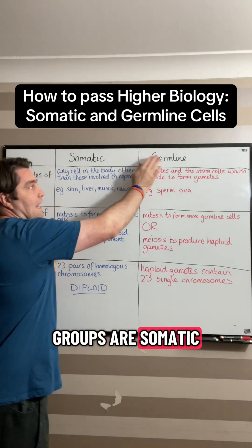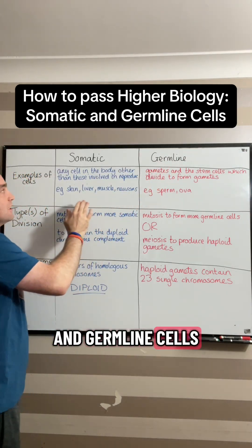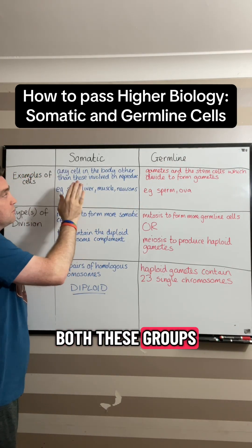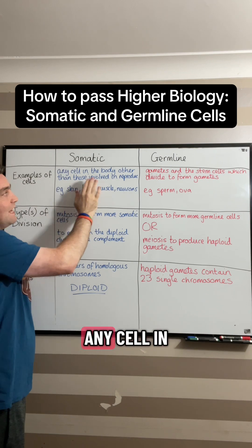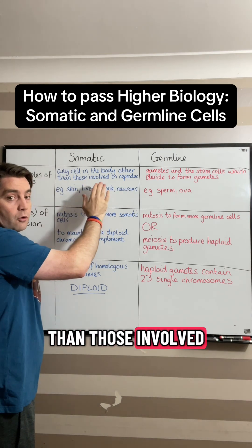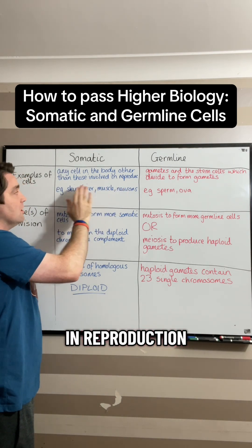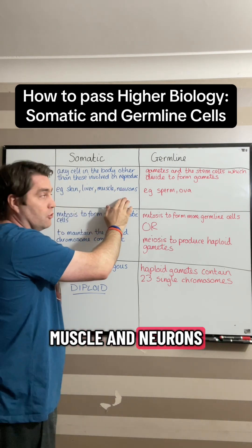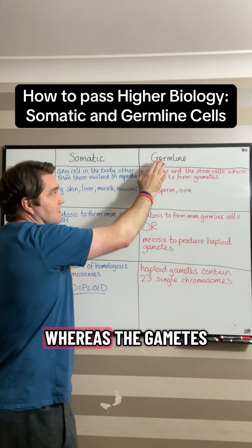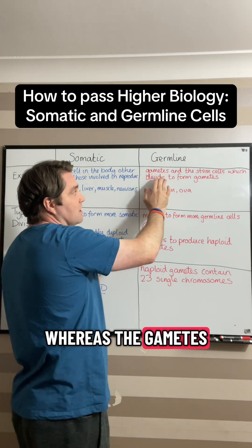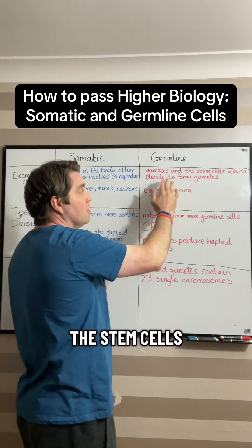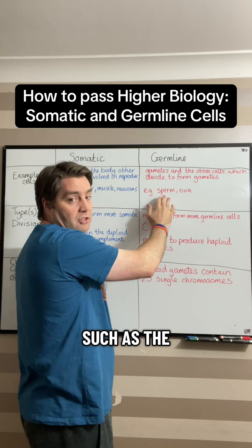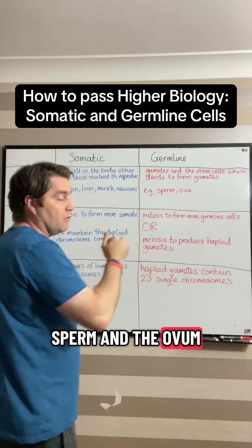The two groups are somatic and germline cells. Somatic cells are any cell in the body other than those involved in reproduction, so things like skin, liver, muscle and neurons, whereas the germline involves gametes and the stem cells which divide to form the gametes, such as the sperm and the ova.